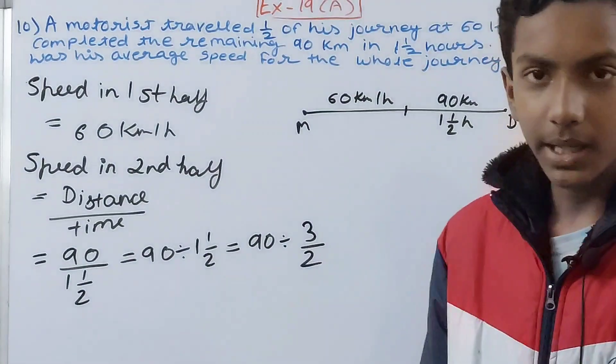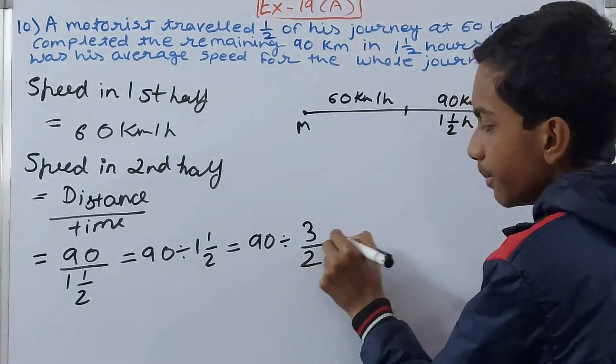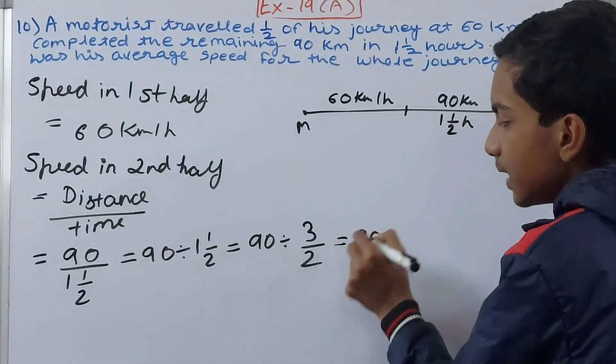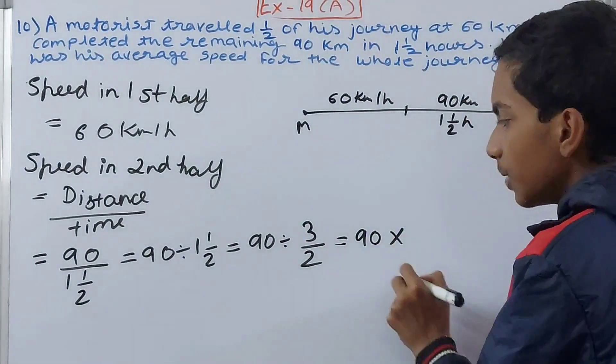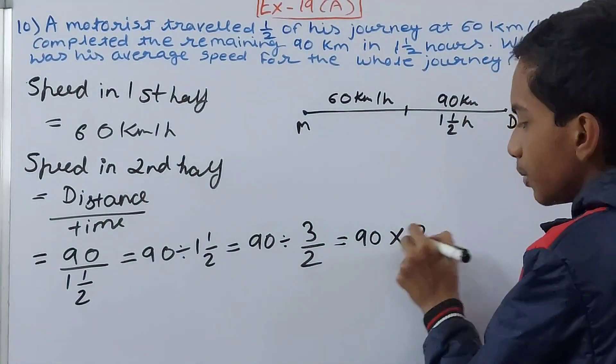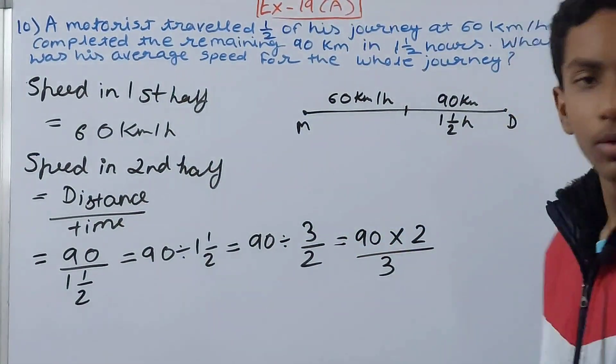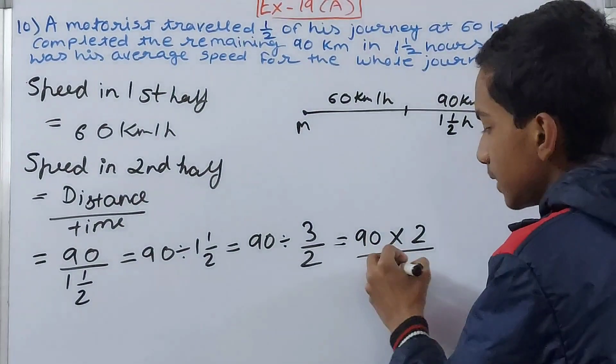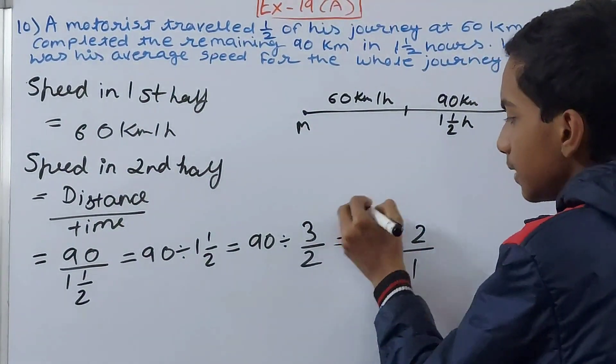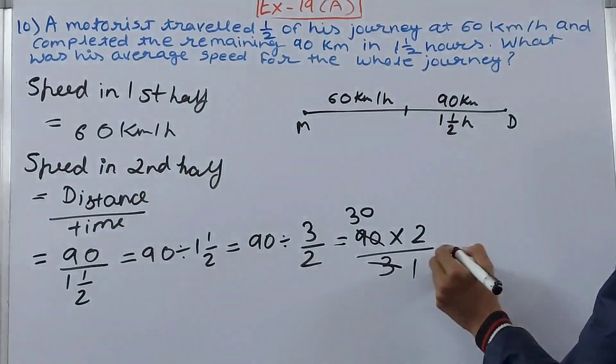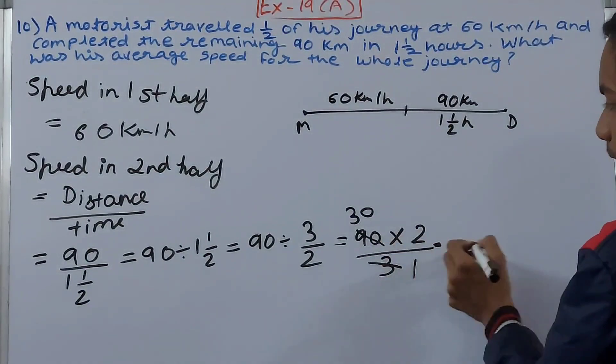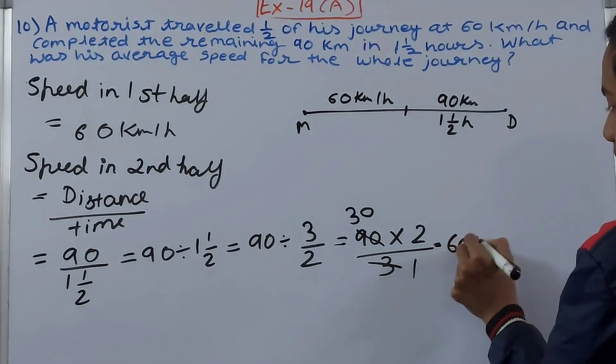Now calculate and simplify this. 90 will stay as it is, division changes to multiplication, the fraction gets reciprocated to 2/3. Now solve this: one and three, zero thirty, so this becomes 30 into 2, that is 60 kilometers per hour.